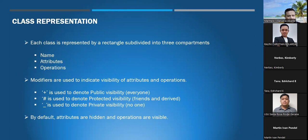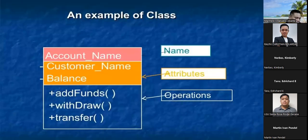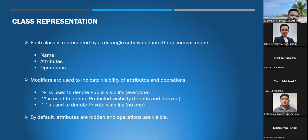Class representation: a class is represented by a rectangle subdivided into three compartments — the name, the attributes, and the operations. Modifiers are used to indicate visibility of attributes and operations: the plus sign (+) denotes public visibility, accessible to everyone; the hash sign (#) denotes protected visibility, for friends or derived classes; the minus sign (−) denotes private visibility, accessible to no one. By default, attributes are hidden and operations are available. Here is a sample of the rectangle divided into three compartments.